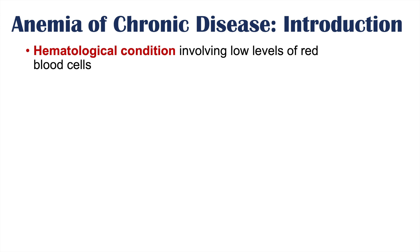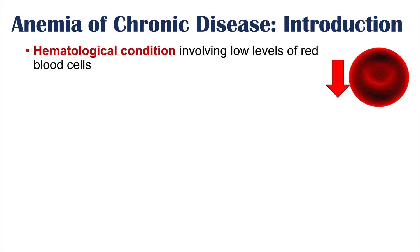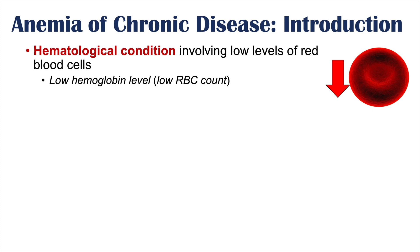Anemia of chronic disease is a hematological condition involving low levels of red blood cells — this is essentially the definition of anemia. More specifically, anemia is a low hemoglobin level. So anemia of chronic disease is when there are low levels of red blood cells or a low hemoglobin level in the context of a chronic inflammatory condition.